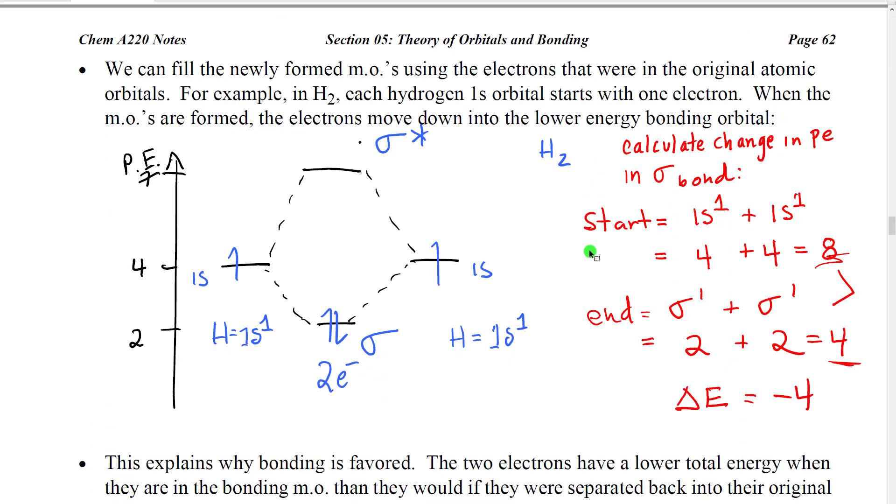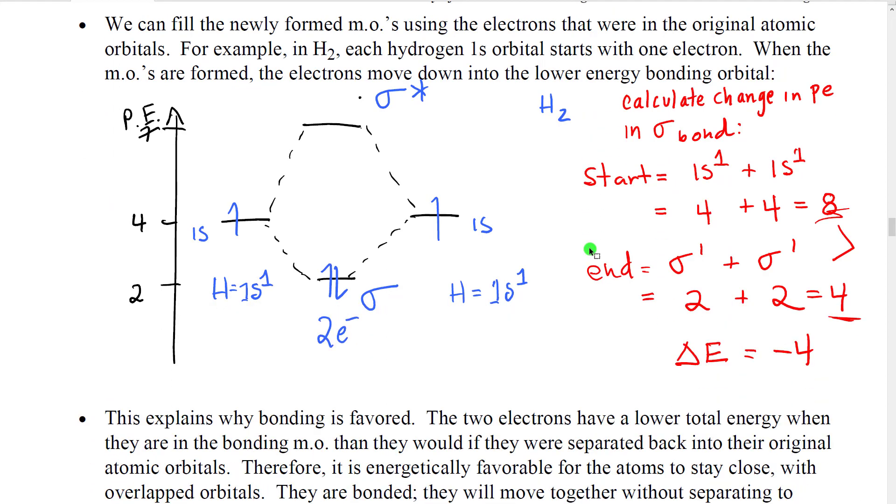So now what we want to do is we want to fill the new molecular orbitals the same way that we would fill atomic orbitals doing electron configuration. So going back to our diagram, this is the diagram that we made in the earlier section of the notes, where we took the 1s orbital, which had a particular potential energy, a second 1s orbital, particular potential energy. They were on the outside. We brought them together in the middle. We created a sigma orbital, which had a lower potential energy. We created a sigma star orbital, which had an even higher different potential energy.